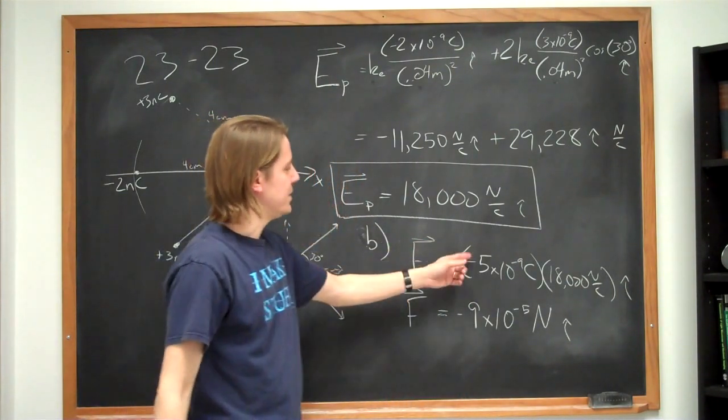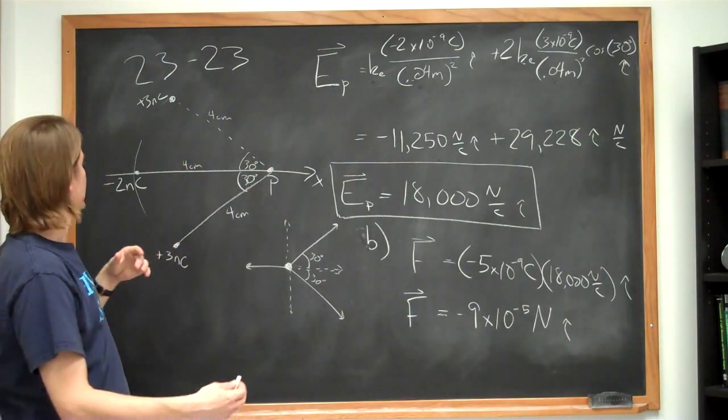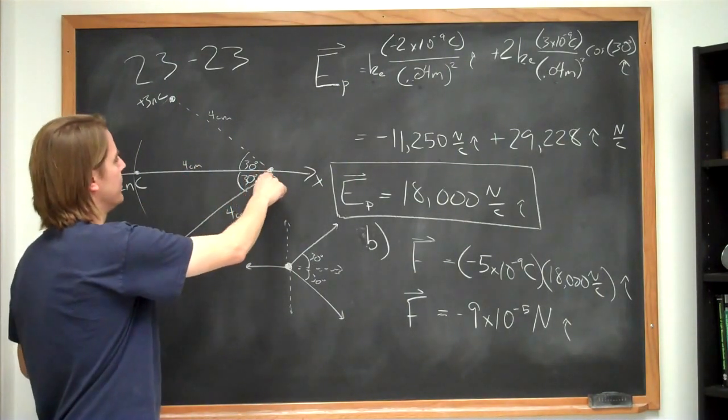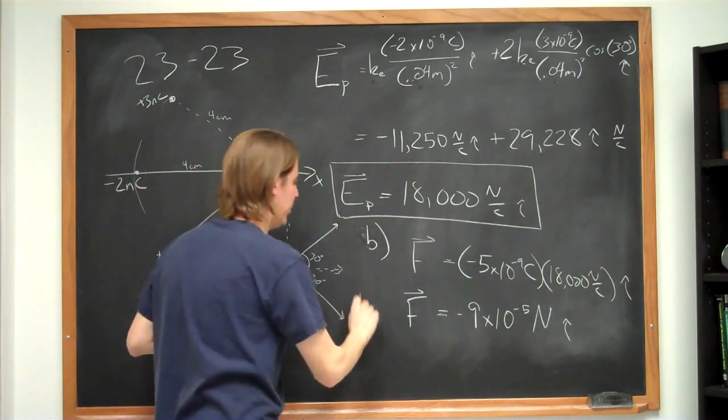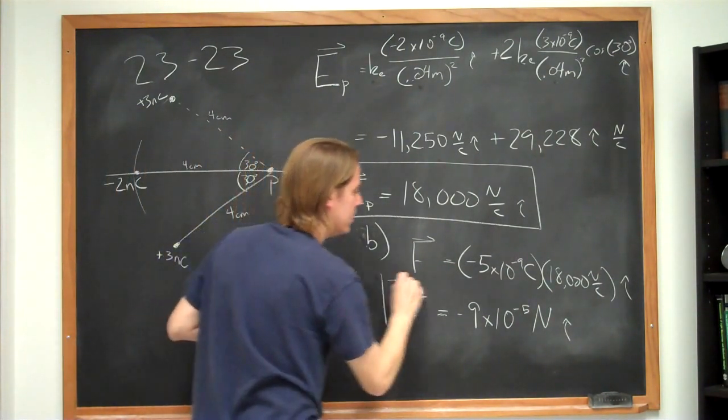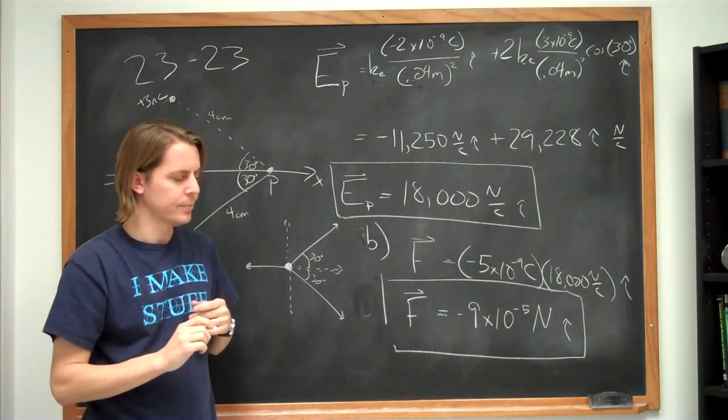So again, the minus causes it to be negative in the i-hat direction, which means the force is this way. And that's what you would expect. You would expect the negative charge feels this way. The negative charge would feel the force this way. So this is part B. 9 times 10 to the minus 5 newtons. That's it.